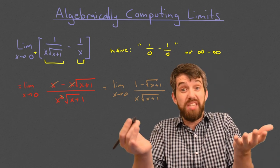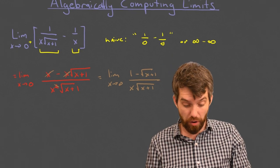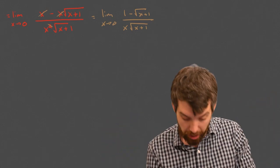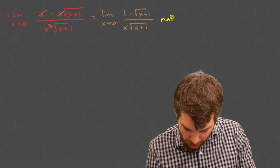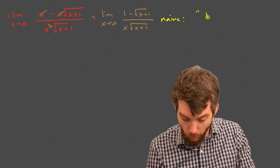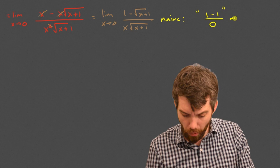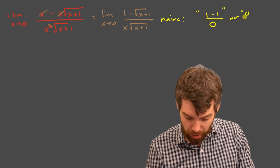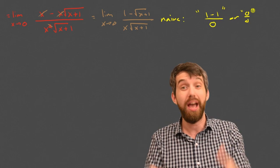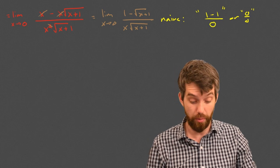I've done some algebraic manipulations — but am I done? Can I just plug in x equals zero now? If I do a naive substitution, the top looks like 1 minus 1, and the bottom has a zero — in other words, it looks like zero divided by zero, which is another indeterminate form. I don't know how to deal with zero over zero, so I have to keep going with the algebra.